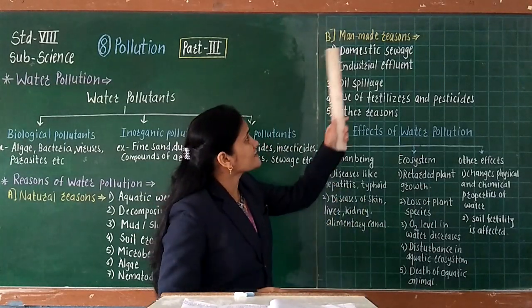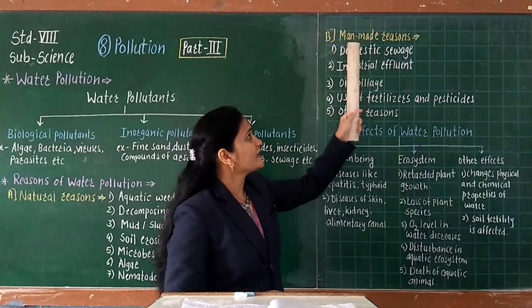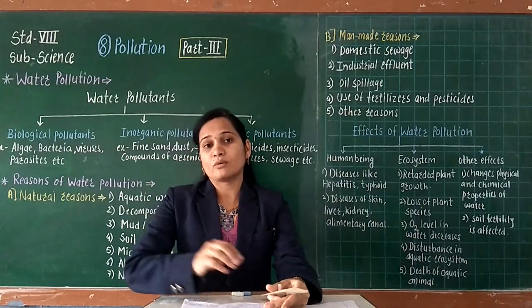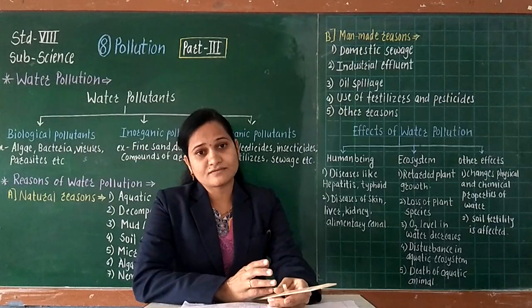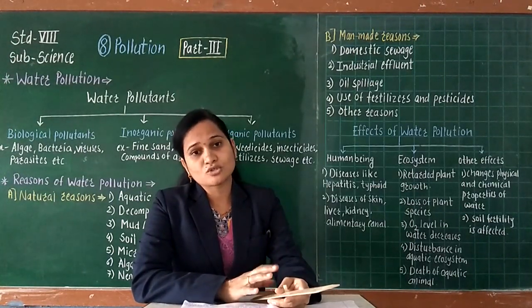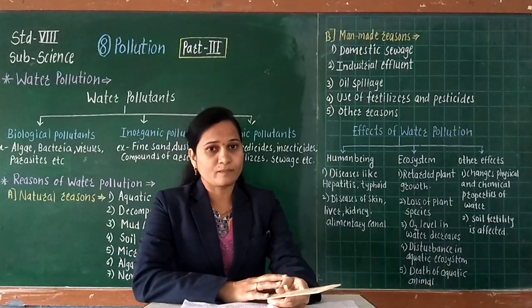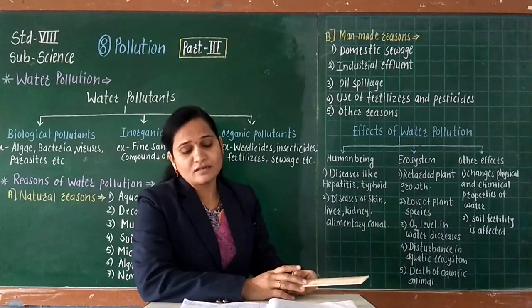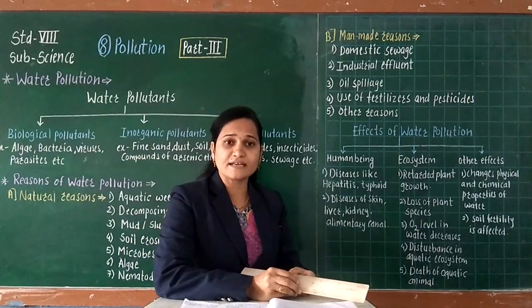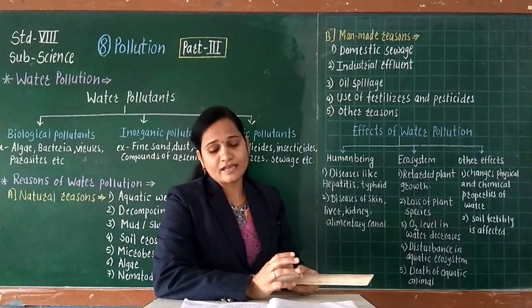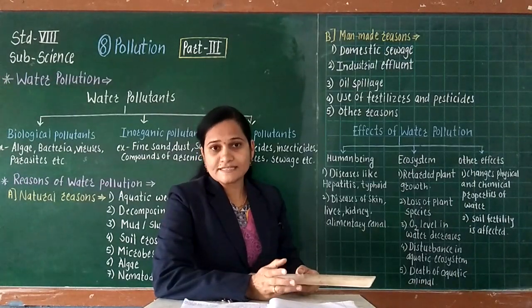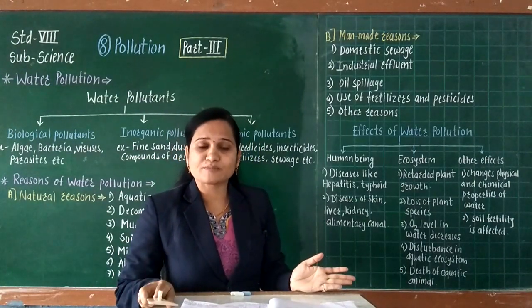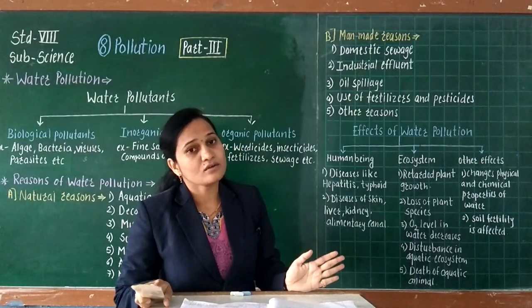Now let us see the man-made reasons. The first man-made reason is domestic sewage — that is, domestic sewage from villages and cities, when directly disposed into water, is one reason for water pollution. The second reason is industrial effluent — various pigments, bleaching chemicals, fibers, mercury, and lead used in industries, when directly disposed into water, also cause water pollution.